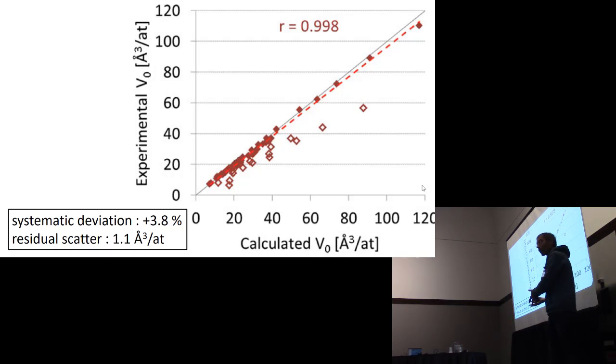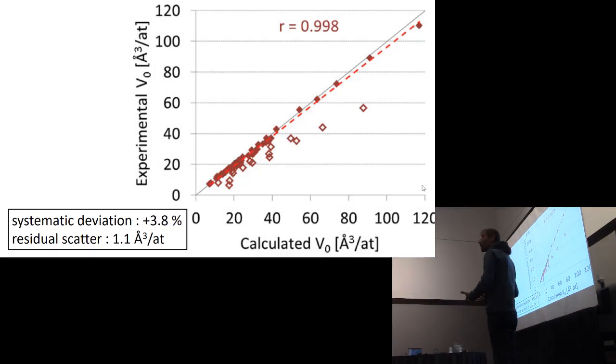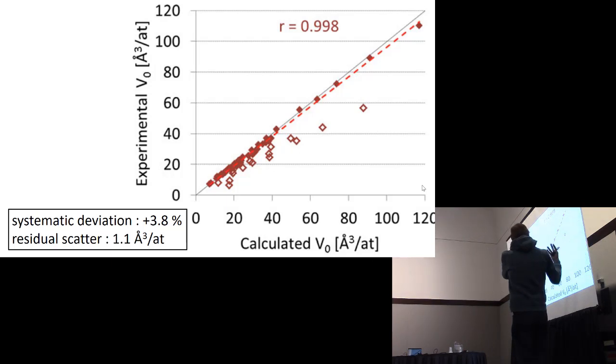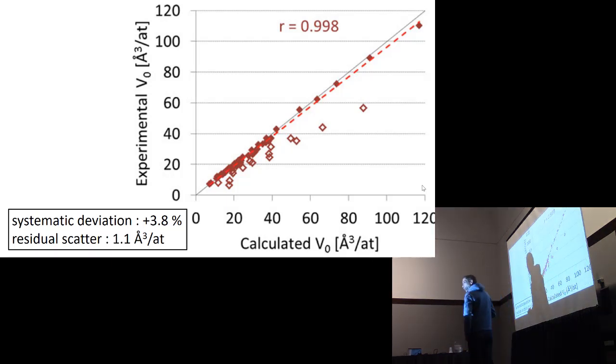These are the van der Waals bonded crystals, the noble gas crystals for instance. It's known that PBE isn't a good description for such chemical bonds, so these naturally drop out in this analysis. But we will concentrate on the ones for which PBE is a valid description.